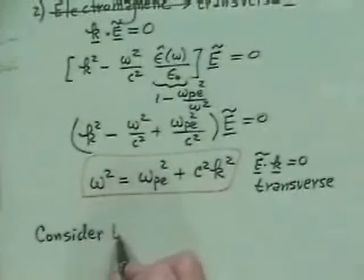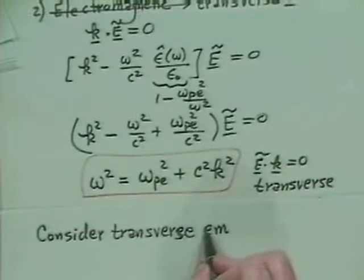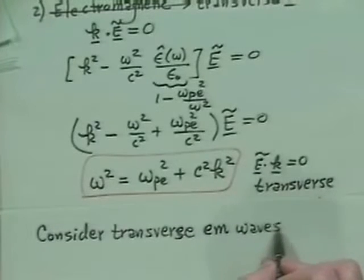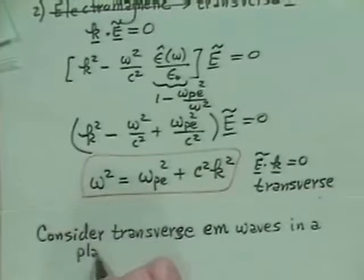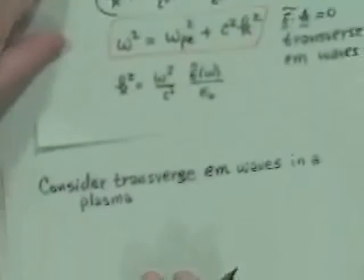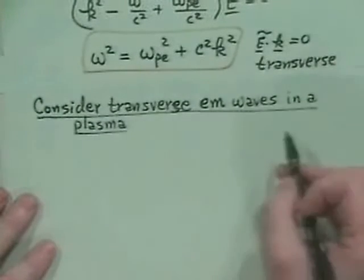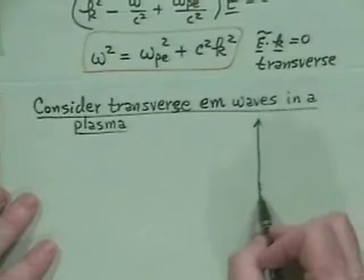What we want to do is talk about what this dispersion relation means — and talking about it usually means graphing it. So let's consider transverse electromagnetic waves (sometimes abbreviated EM) in a plasma. Remember, transverse means E is perpendicular to k, and this is our dispersion relation for those waves. What does our dispersion diagram look like for those waves?